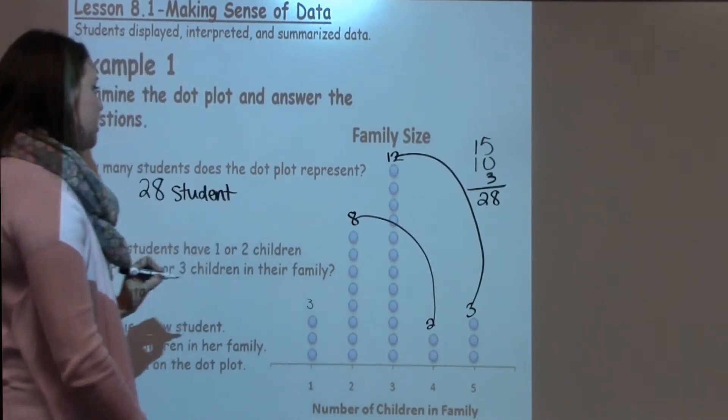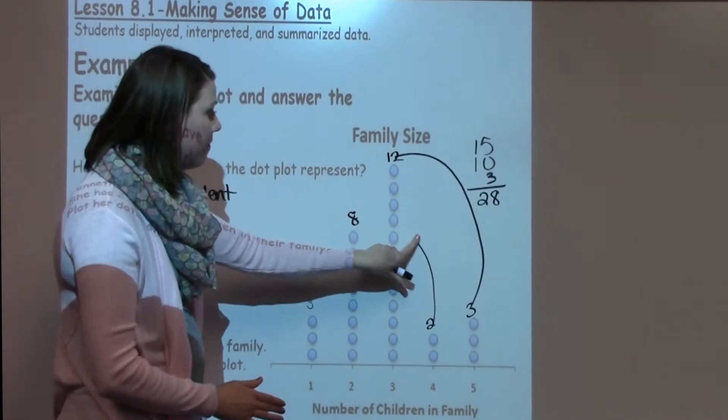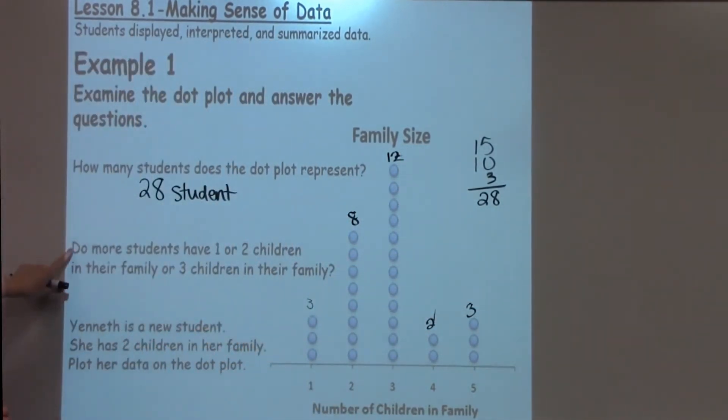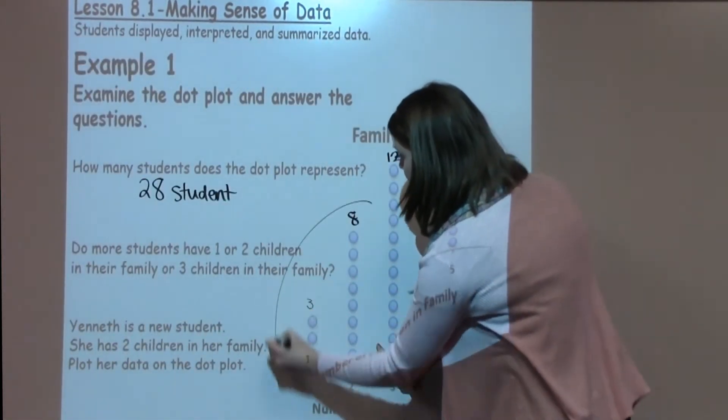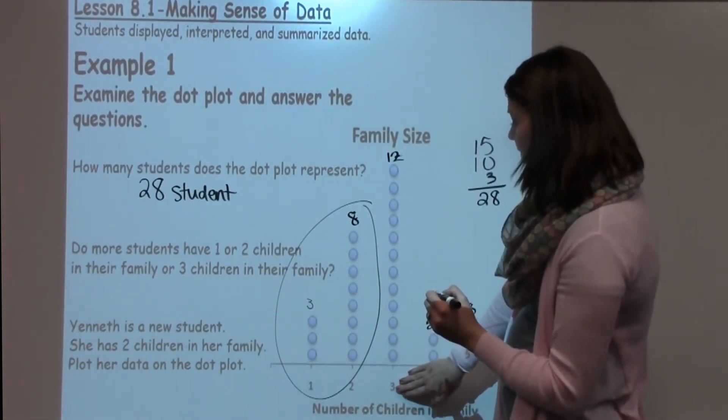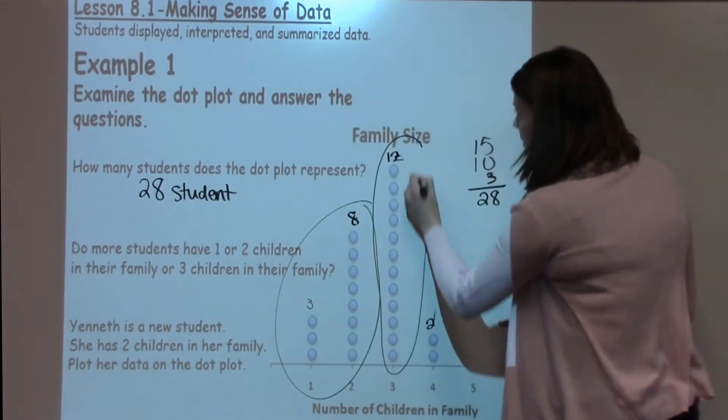Now the second part of this question is still using that same dot plot. Notice I didn't erase my numbers in case I need to use them again for another question. Do more students have one or two children in their family, or three children in their family? So now I need to look at a combination of one and two, which is right here. I need to look at these two items right here, or do they have three children in their family? So I need to compare these two circles to figure out who has more.